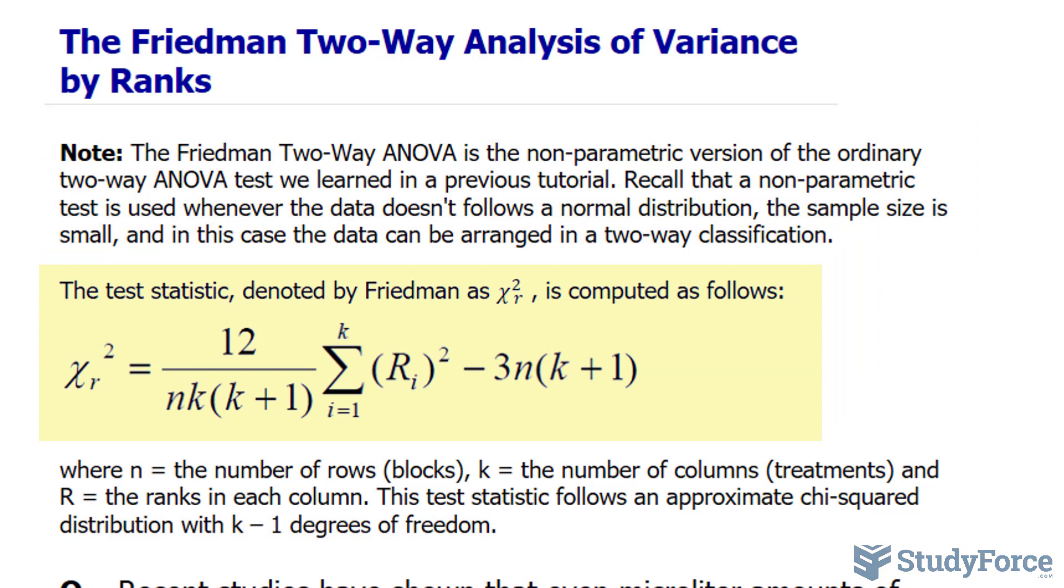The test statistic, denoted by Friedman as chi-square-sub-r, is computed as follows, and we'll be discussing this formula in greater detail after we read the question.